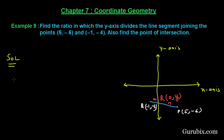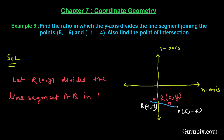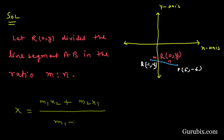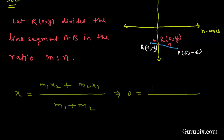Let the ratio be M : N, and let point R with coordinates (0, y) divide the line segment in the ratio M : N. Now we shall find the x-coordinate of point R using the section formula: x = (M·x₂ + N·x₁) / (M + N). Here x = 0, M₁ = M, x₂ = 5, M₂ = N, and x₁ = -1, giving (5M + N·(-1)) / (M + N).